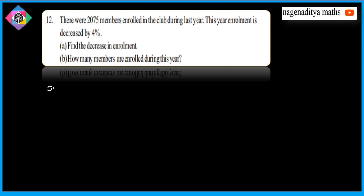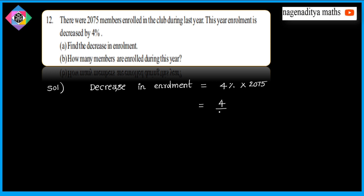Solution: Decrease in enrollment is equal to 4% into 2075, that is 4 by 100 into 2075. So this is equal to 2075 — 4% into 25 times cancel, 25 into 83 times cancel. The decrease is 83 members.